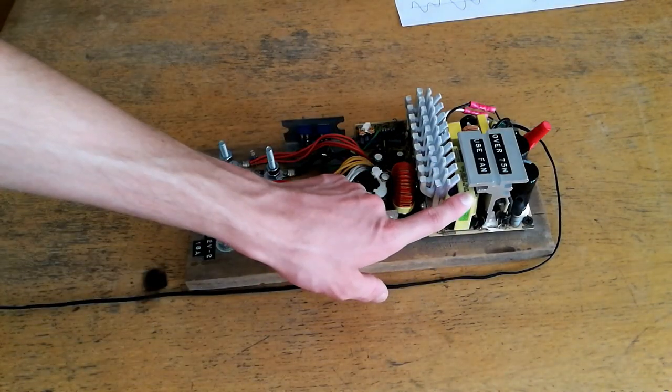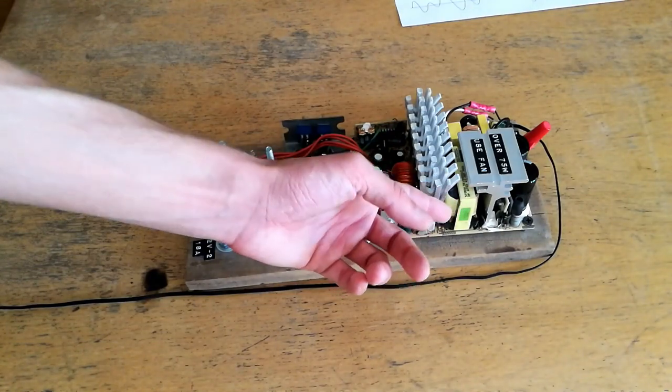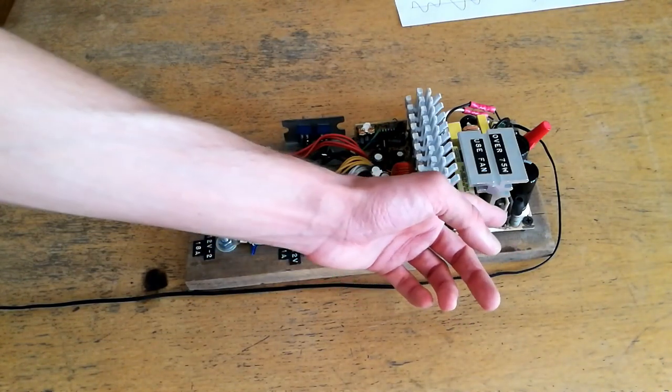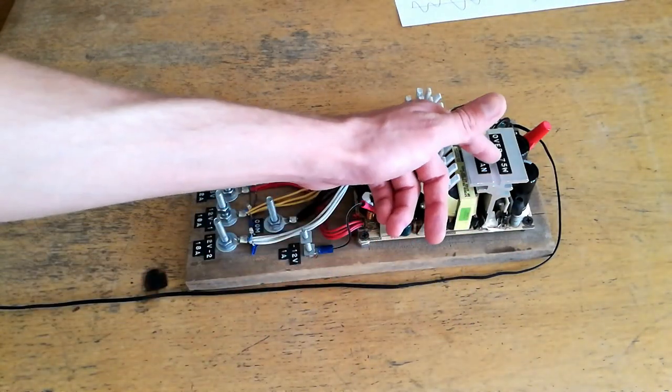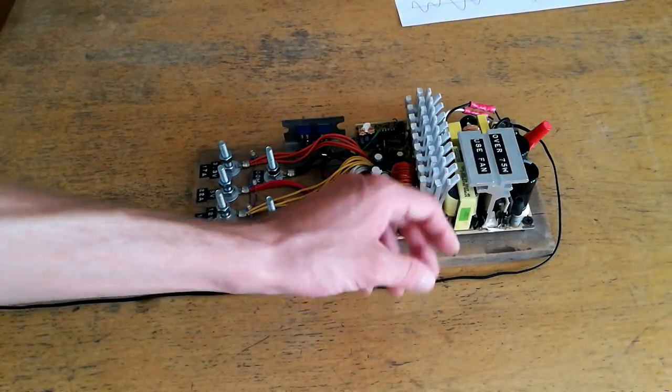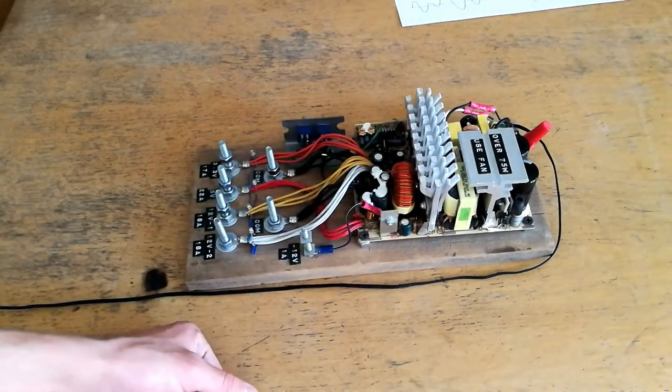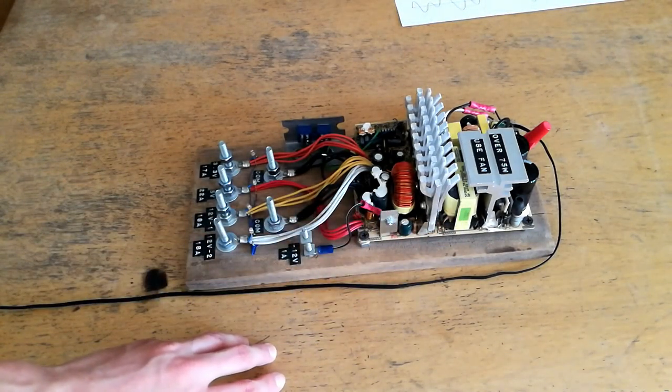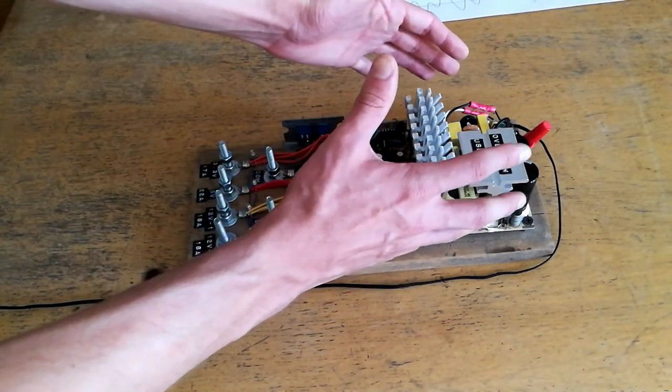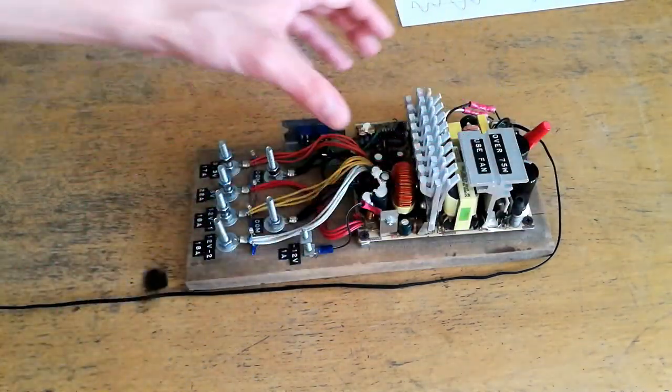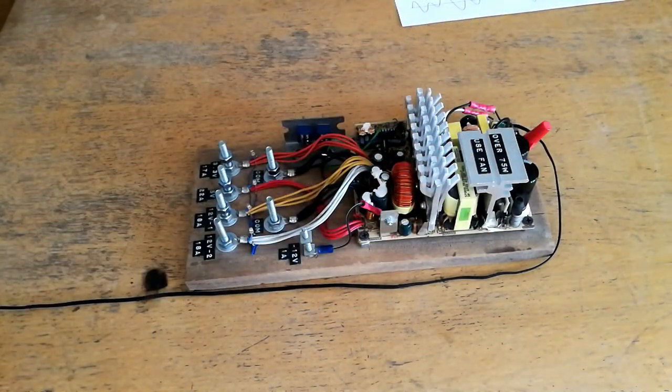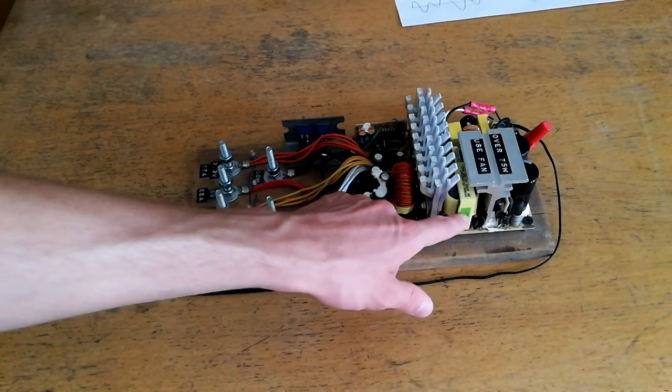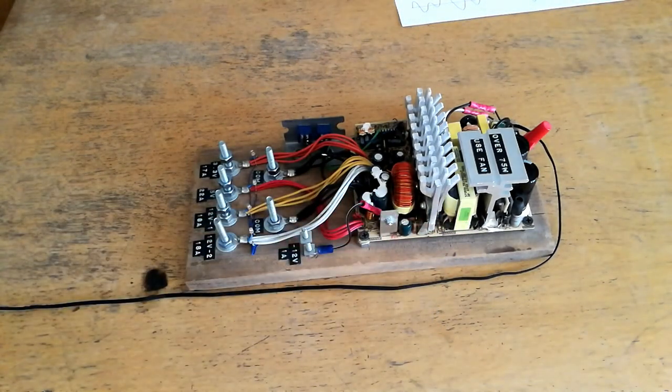Now since this is a ferrite core transformer, it operates best at very high frequencies, which is why we have that fast switching MOSFET under this heatsink, and it also can be much smaller for an equivalent size. If this were an iron core transformer, to provide 350 watts, it would have to be probably as big as this entire power supply, and of course it would weigh probably 100 times as much. So that's the advantage of using fast switching in switched mode power supplies.